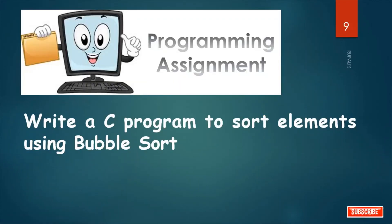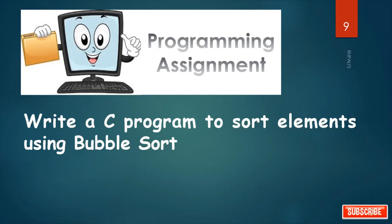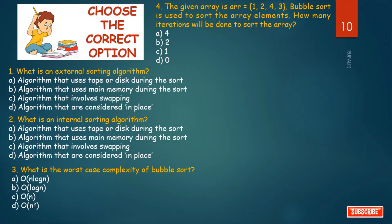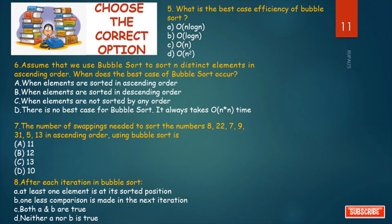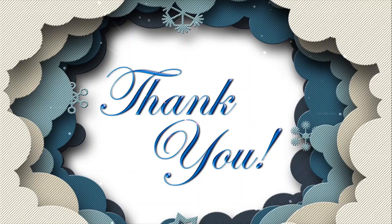This is your programming assignment: write a C program to sort elements using bubble sort. Try to execute this program on your own and feel free to ask any questions if you are facing any problem. These are your homework — try to answer the question in the comment section. Pause this video and try to answer. I am waiting for your reply. For more updates, please like, subscribe, and share the channel. That's all for today. Thank you.